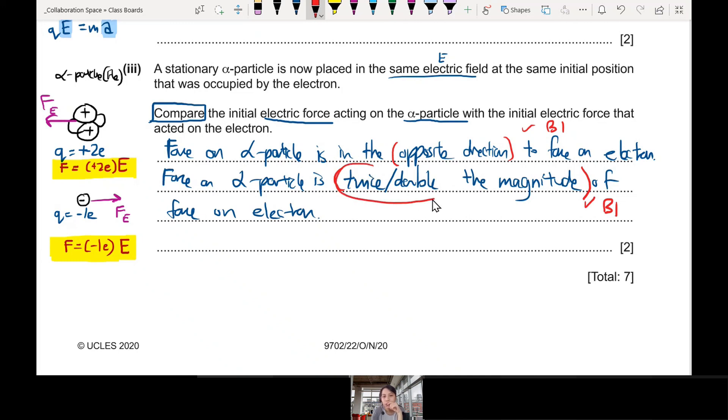I am looking for you mentioning double or twice the magnitude for alpha particle. Some of you may mention, if I didn't write twice or double, I just say it's larger. If you say larger, not specific enough. When you are comparing between two things, if possible, add in a factor. Two times bigger. Three times bigger. If you have the values. If you don't have values, then you say larger.